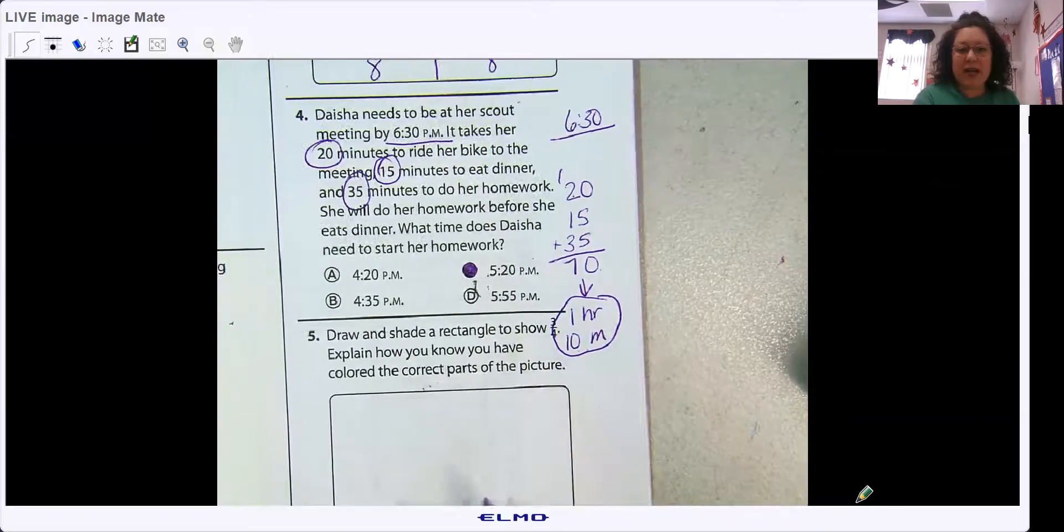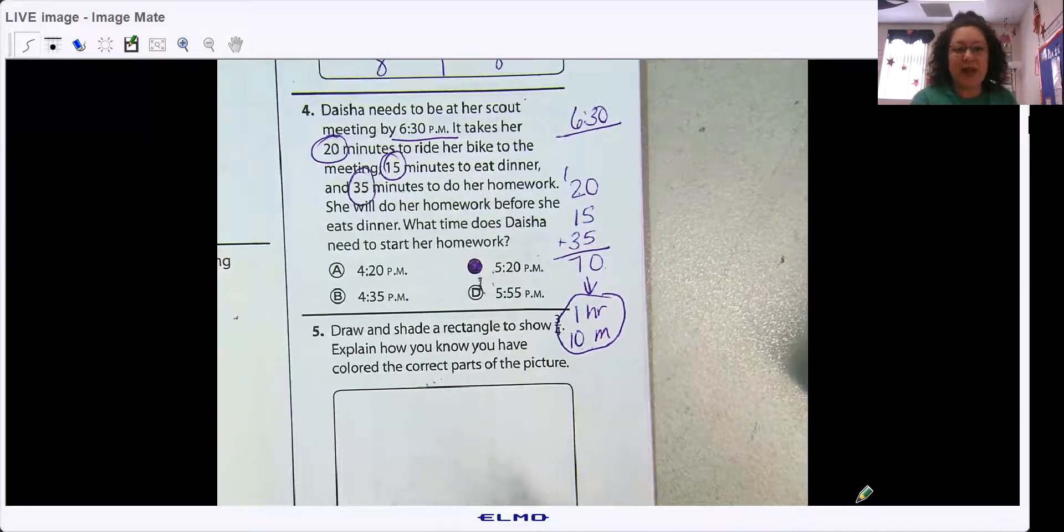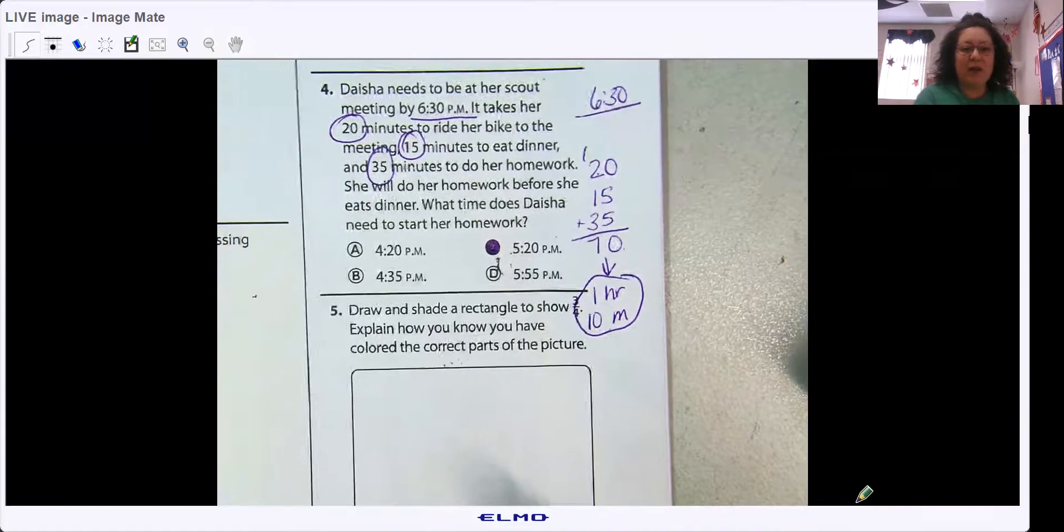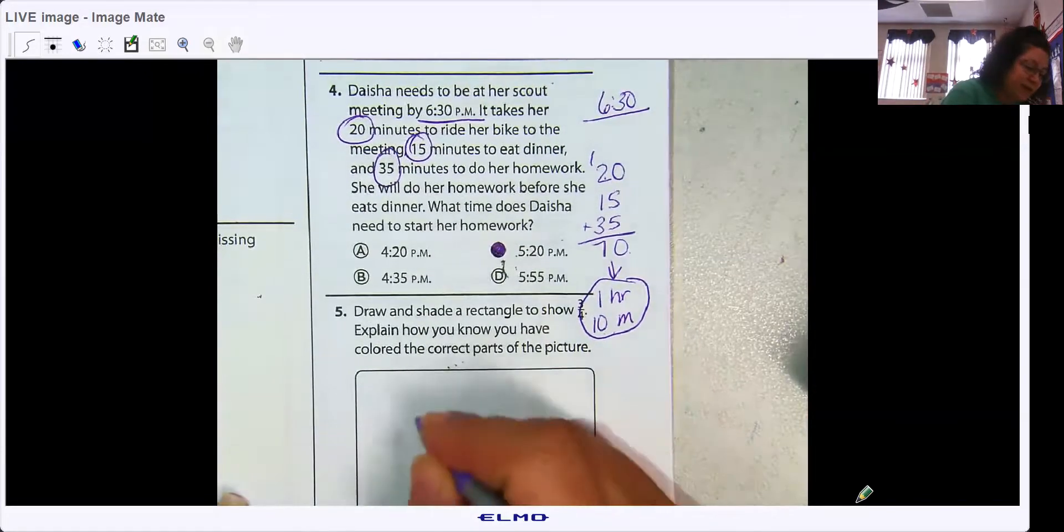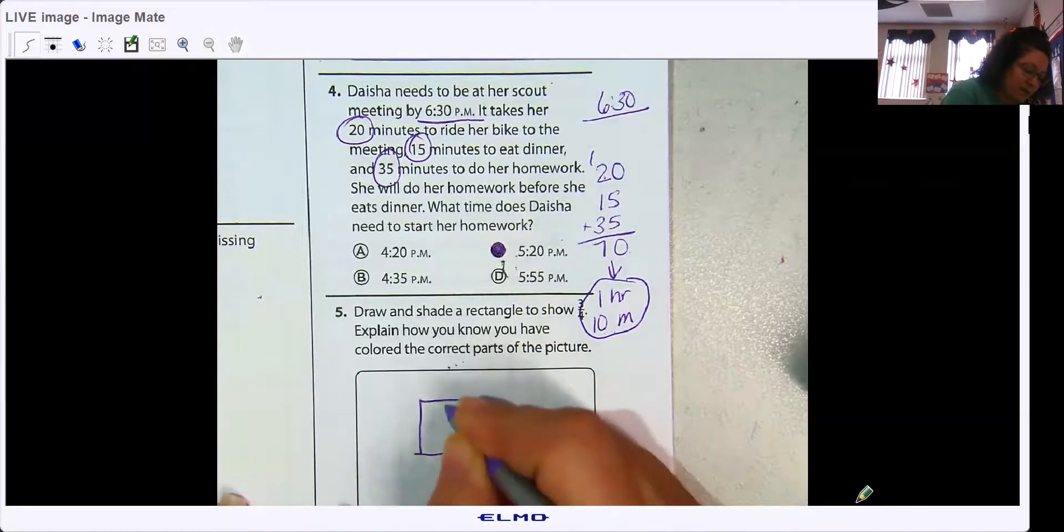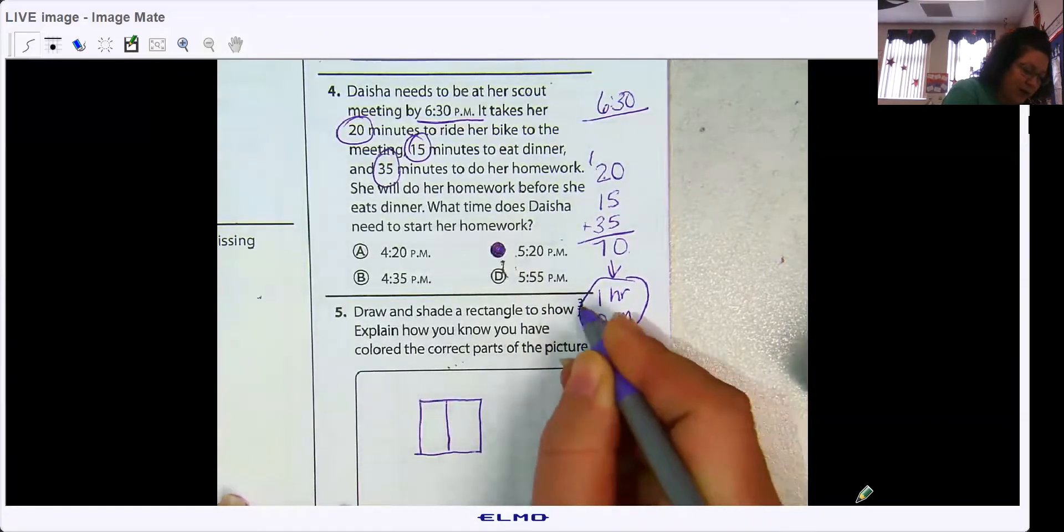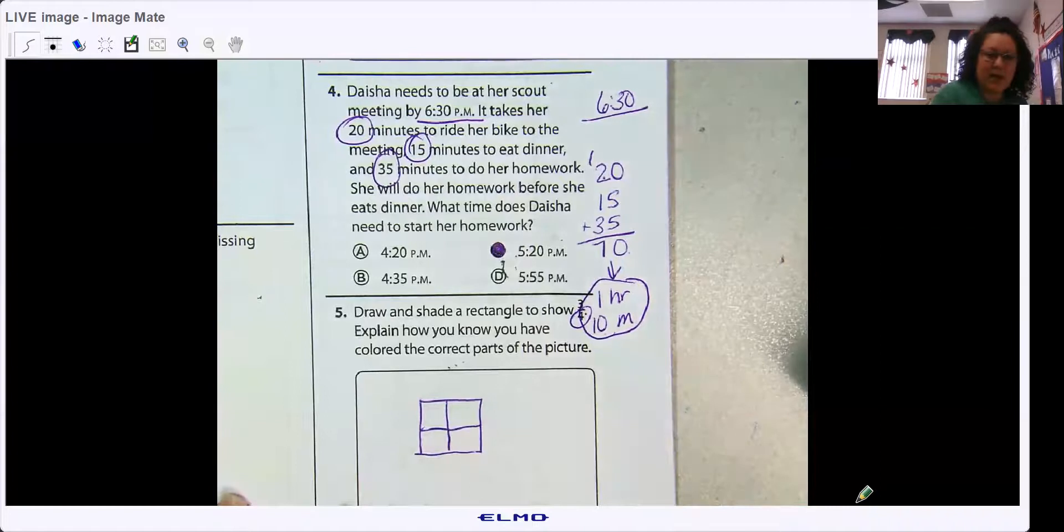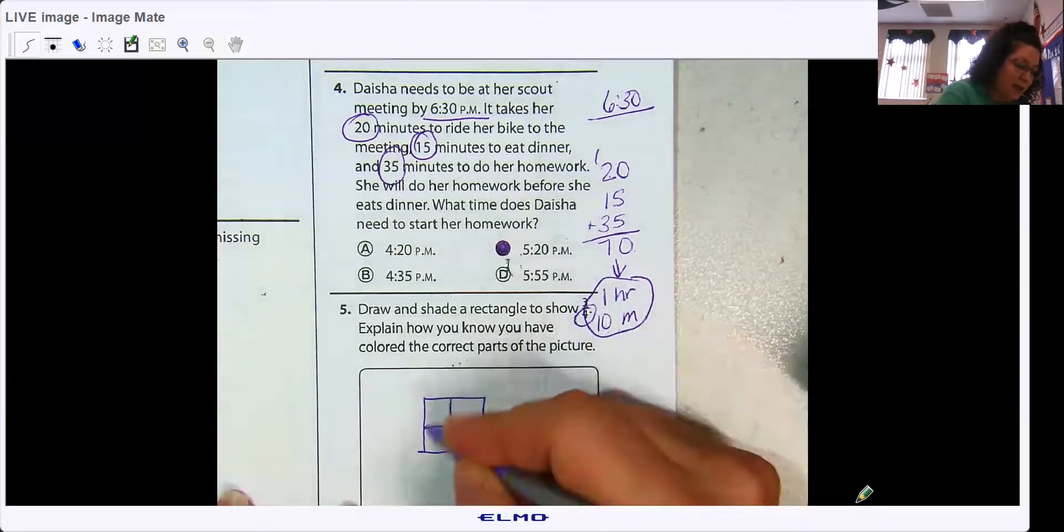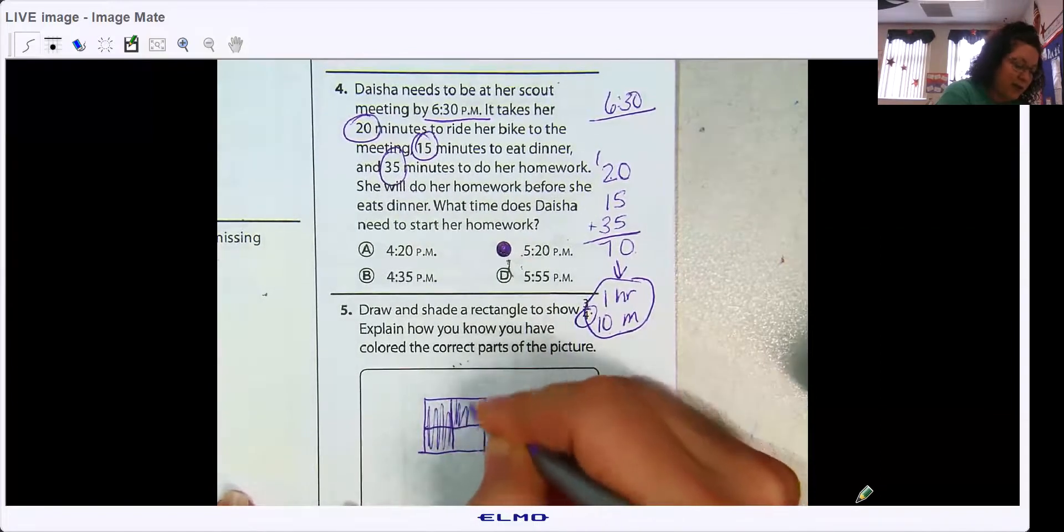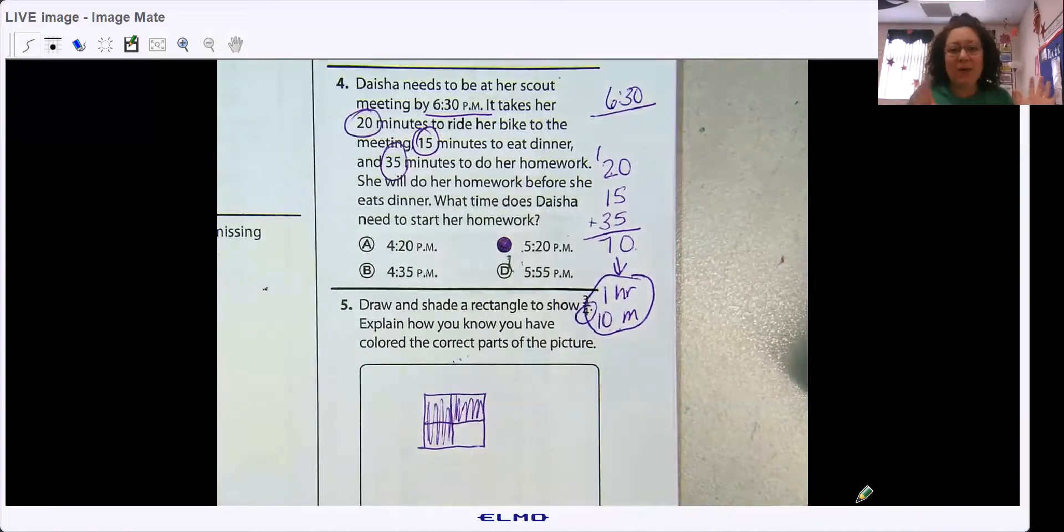Draw and shade a rectangle to show three-fourths. Explain how you know you have colored the correct parts of the picture. That four tells me four pieces all together. And my numerator three tells me three pieces are shaded. There's many ways to do this.